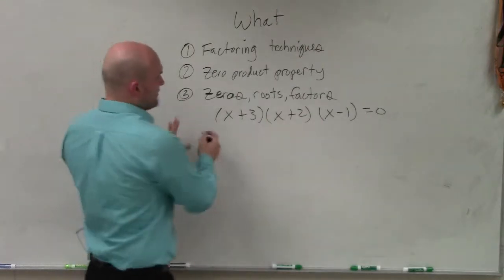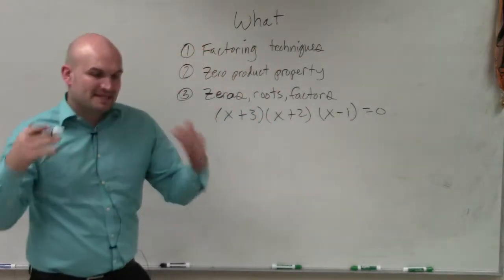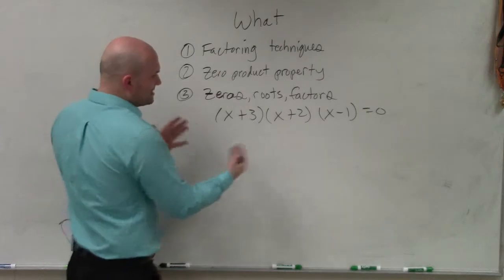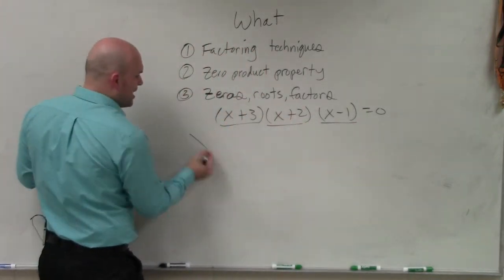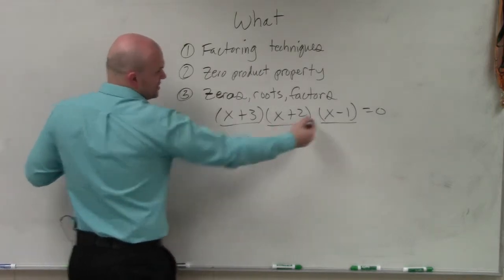We do all the factoring so we can get to this. But now, the last thing you need to know is what these are called. These are called our factors. So when I apply the zero product property, I set each of my factors equal to zero.